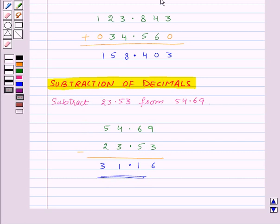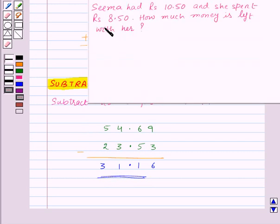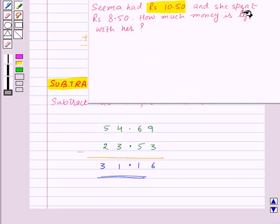Let us take one example. Here, Seema had rupees 10.50 and she spent rupees 8.50. How much money is left with her?